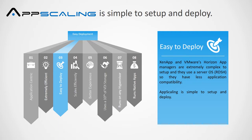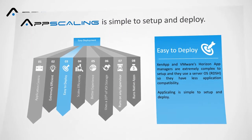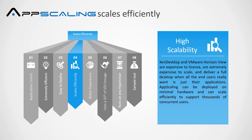Once again — Windows 7 applications running on Windows 7 and supported by Windows 7. App Scaling scales efficiently with high scalability. Zen Desktop and VMware Horizon View are expensive to license and extremely expensive to scale, delivering a full desktop when all the end user really wants is just their applications. App Scaling can be deployed on minimal hardware and can scale efficiently to support thousands of concurrent users.